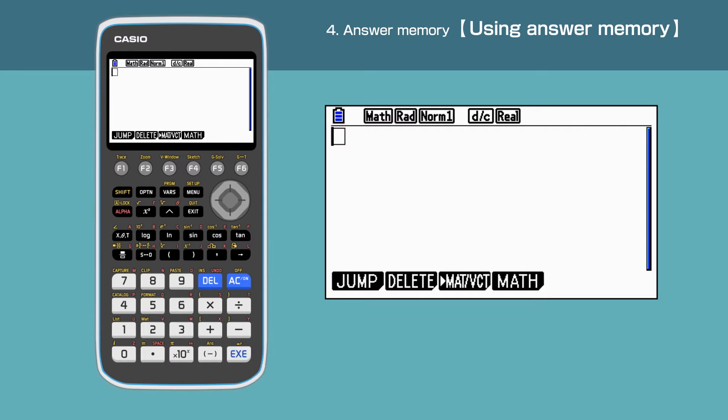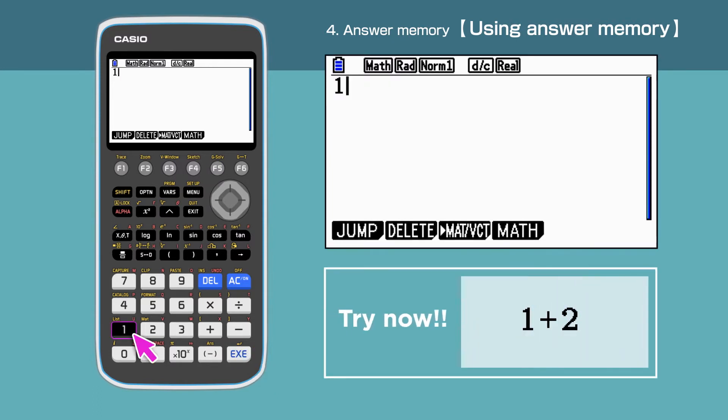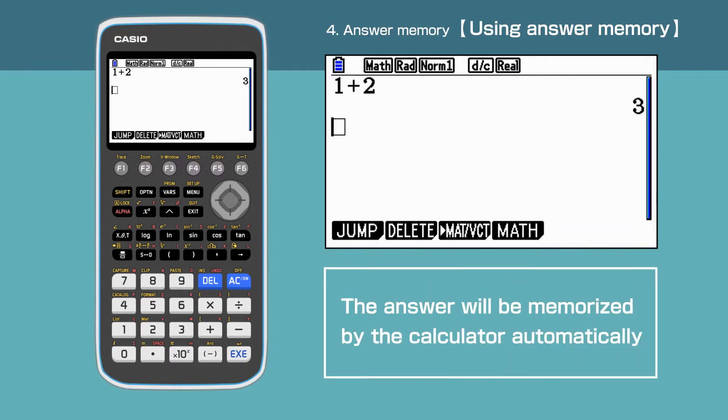Let's use the Answer Memory function. Enter 1 plus 2. The answer for 1 plus 2 is 3, and it is memorized by the calculator automatically.